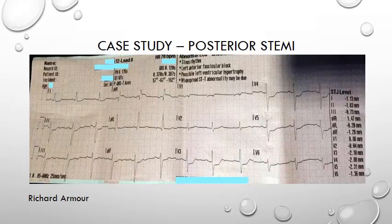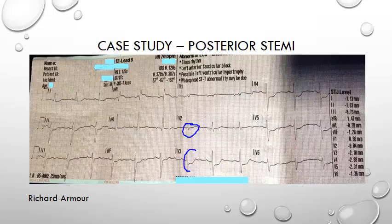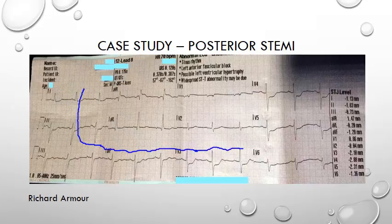Our third ECG was submitted by Richard for a patient in their early 90s with upper back pain radiating into their shoulders. There is ST depression in leads V2 and V3 with a tall R wave, which would make us suspicious. However, looking elsewhere on this ECG there is widespread ST depression seen from the high lateral leads through the inferior leads and up to the left-sided chest leads as well. This is more suggestive of ischemia — most likely sub-endocardial ischemia.